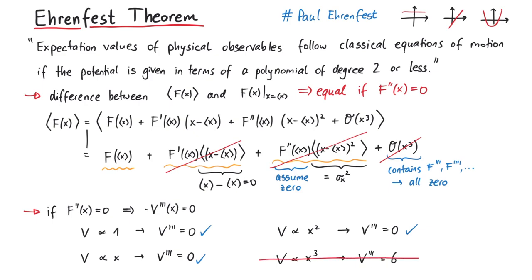Let us summarize. We have shown that for constant, linear, or quadratic potentials, the expectation values of quantum mechanical operators follow classical equations of motion, which is known as the Ehrenfest theorem. And that's pretty much it for this video. Thanks for watching.